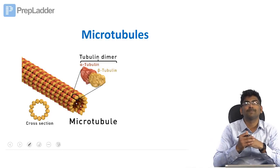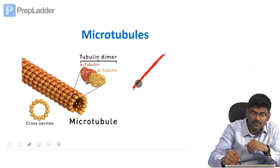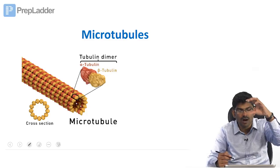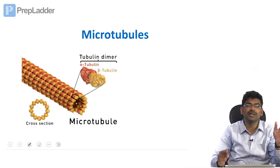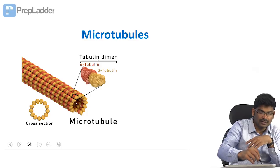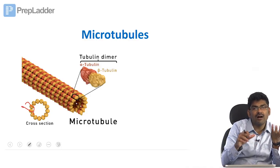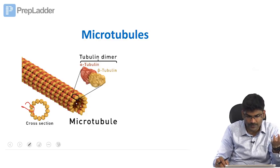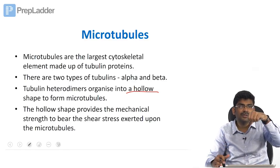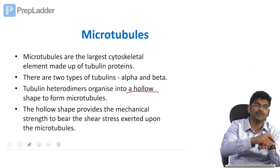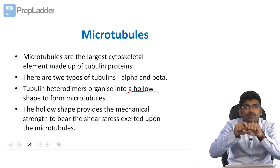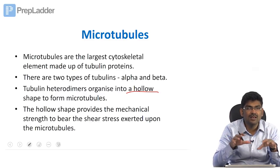Let us go to microtubules. Microfilaments are solid filaments, but microtubules are hollow tubes. There are two tubulin proteins, alpha and beta. They form a heterodimer, and at least 13 of these arrange to form a hollow structure — the microtubule. These are the largest cytoskeletal elements. The hollow shape is responsible for mechanical strength — because it is hollow, it resists compression without breaking.